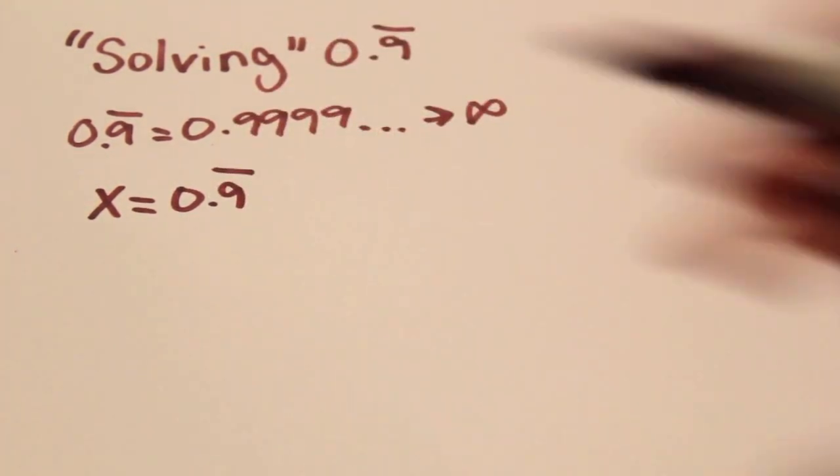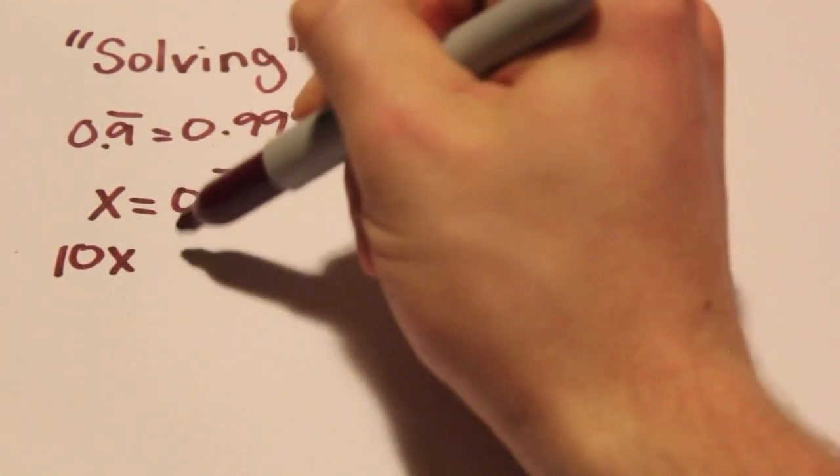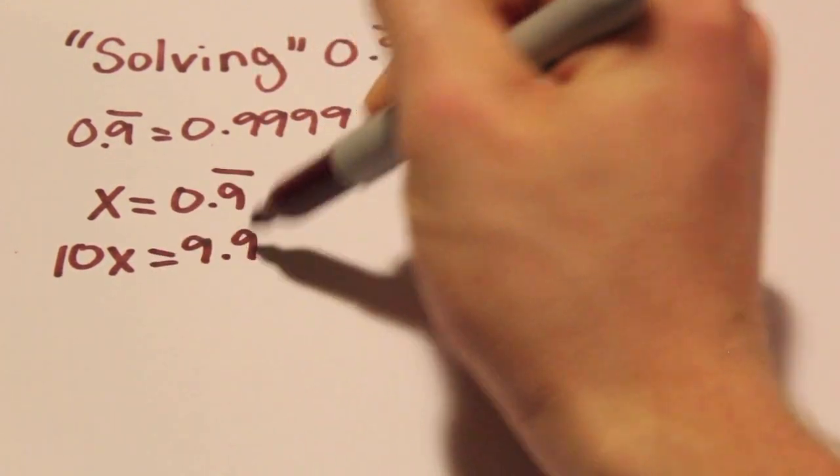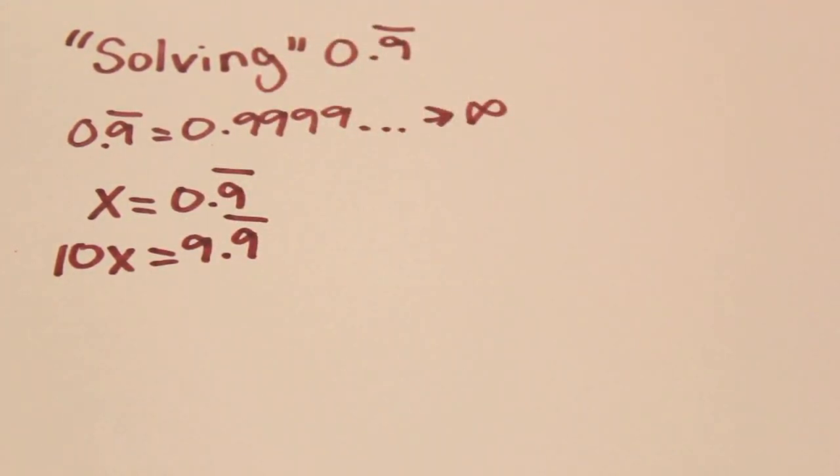When you multiply x by 10, you get 10x equals 9.9 repeated. Now all we have to do is subtract x equals 0.9 repeated from 10x equals 9.9 repeated.